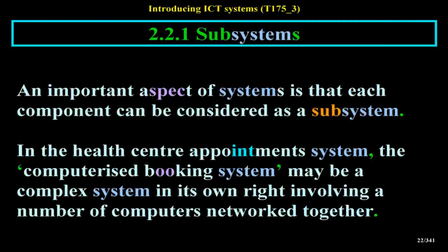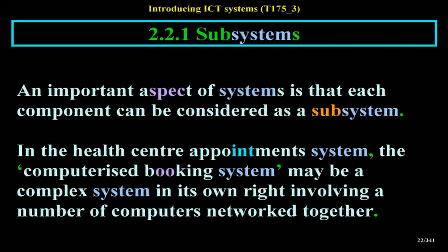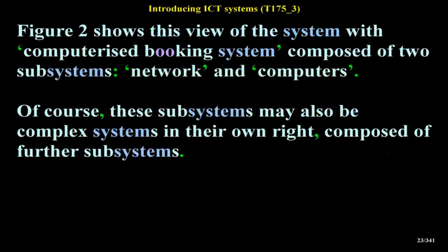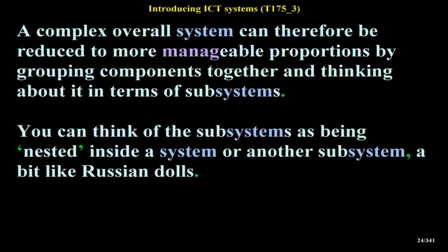An important aspect of systems is that each component can be considered as a subsystem. In the health center appointment system, the computerized booking system may be a complex system in its own right involving a number of computers networked together. Figure 2 shows this view with the computerized booking system composed of two subsystems: network and computers. These subsystems may also be complex systems in their own right, composed of further subsystems.